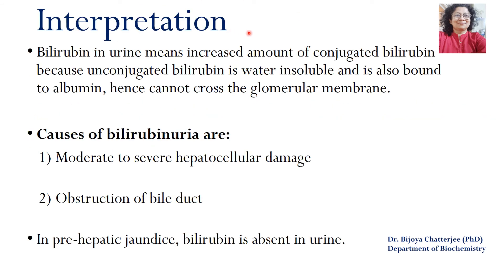Bilirubin in urine means an increased amount of conjugated bilirubin, because unconjugated bilirubin is water insoluble and bound to albumin, and hence cannot cross the glomerular membrane. Causes of bilirubinuria include moderate to severe hepatocellular damage and obstruction of bile. In pre-hepatic jaundice, bilirubin is absent in urine as most bilirubin is unconjugated and bound to albumin, so it cannot cross the glomerular filtrate.